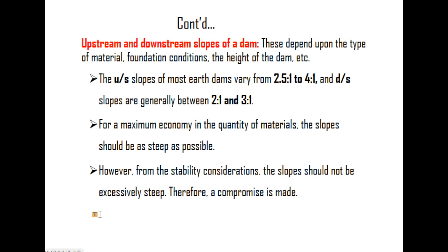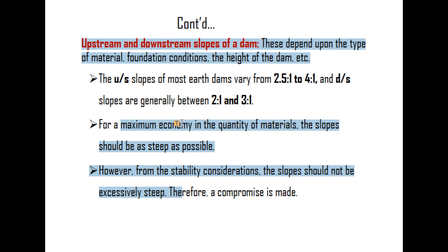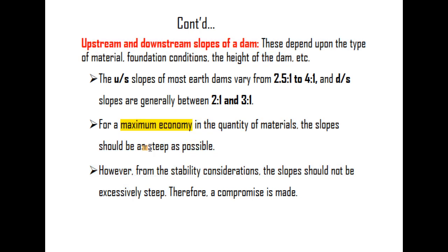Upstream and downstream slopes of a dam depend upon the types of material, foundation conditions, the height of the dam, etc. The upstream slopes of most earth dams vary from 2.5:1 to 4:1. For maximum economy in the quantity of materials, the slopes should be as steep as possible. However, from the stability consideration, the slope should not be excessively steep. Therefore, a compromise is made.